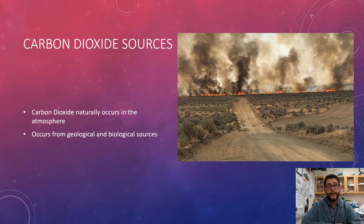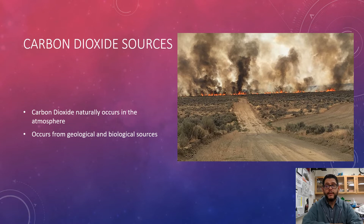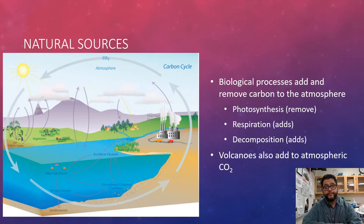We begin by looking at sources of carbon dioxide. Carbon dioxide is going to be in the atmosphere naturally, and it does occur from geological and biological resources. You can have a wildfire or you can have anthropogenic sources of this. It does end up getting into the atmosphere and cycling through pretty quickly. If you go back and think about our biogeochemical cycles from previous units, make sure to review those. CO2 does cycle through and you have several sinks and several sources of it.